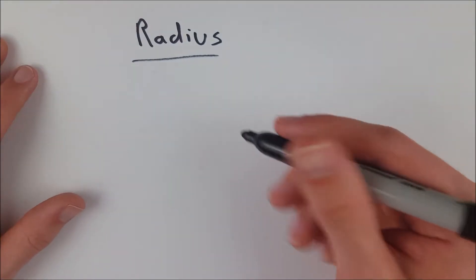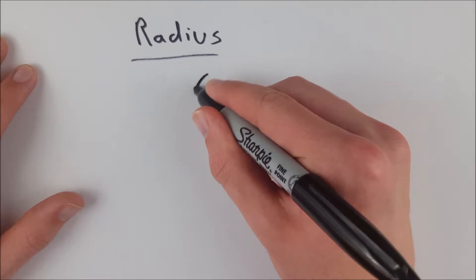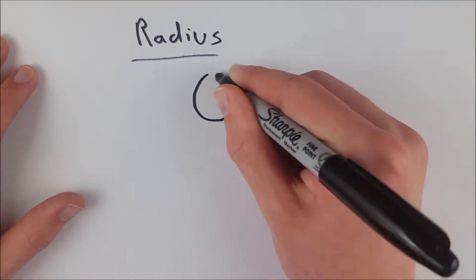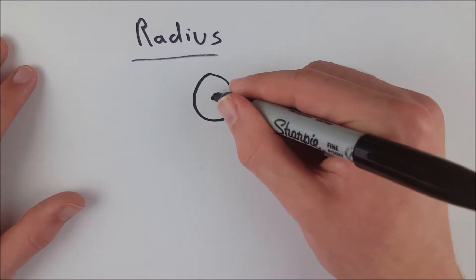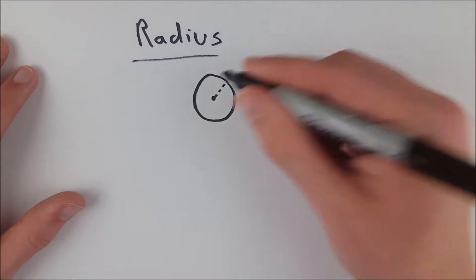What is the radius of a circle? The radius of a circle is quite simply the length from the center of the circle, which is right here, to any point on the circle.